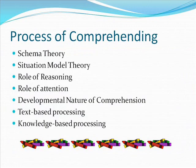Gunning defined comprehension as a constructive, interactive process involving three factors: the reader, the text, and the context in which the text is read. Module 2 will deal with reader factors, and Module 3 will deal with text factors. For comprehension to improve, the interaction among all three factors must be taken into consideration.